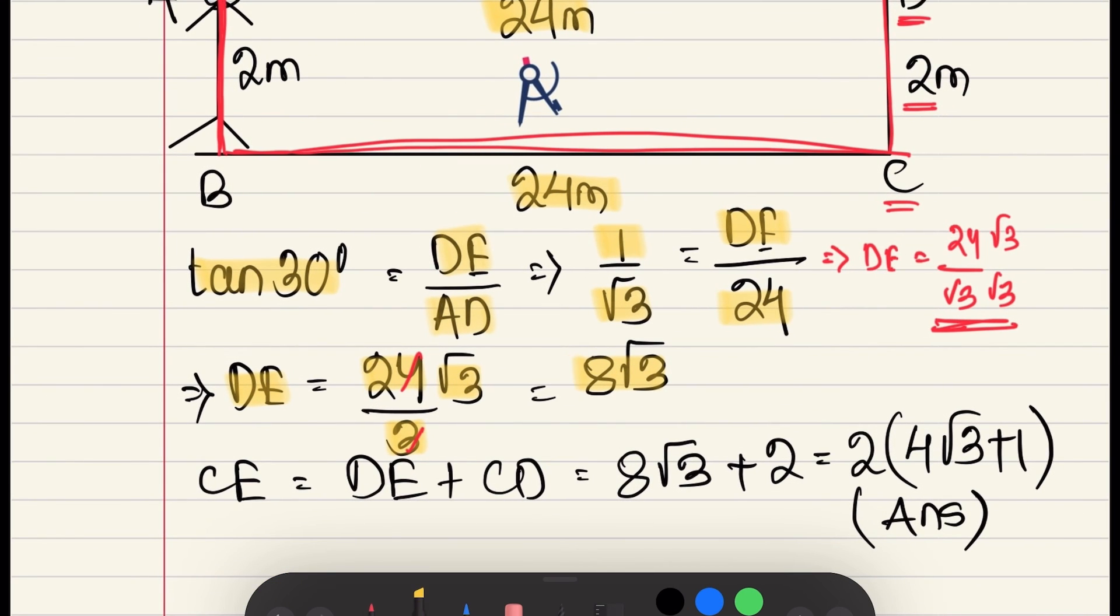So, this distance CE is equal to DE plus CD, which is equal to 8 root 3 plus 2. If we take two common, then we will answer 2 whole into 4 root 3 plus 1, which is our answer.